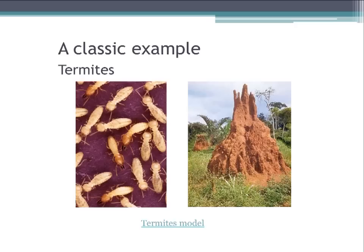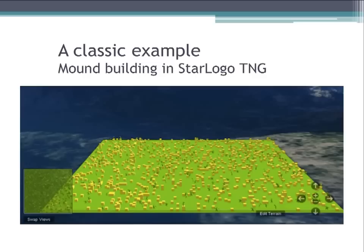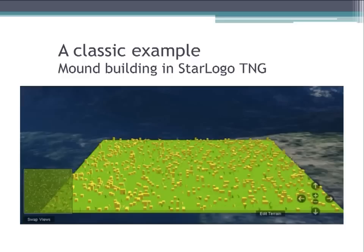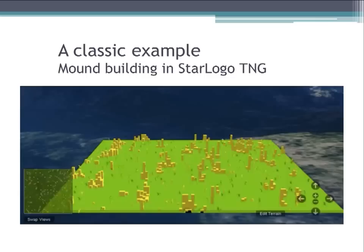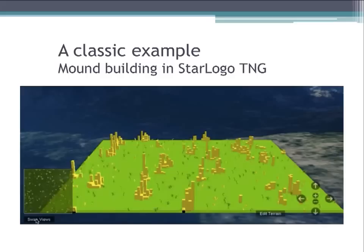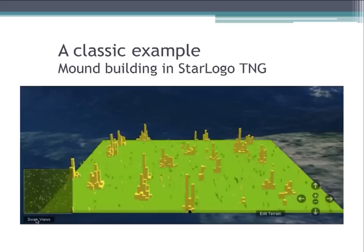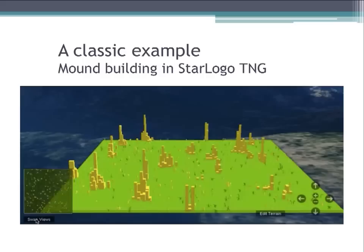A classic example is termites and their mound building. In a StarLogo TNG model, there are termites and wood chips — the wood chips are yellow cubes. Termites follow three simple rules: they wander until they find a wood chip, pick it up and carry it, then roam until they find another wood chip, at which point they drop the one they're carrying next to it. With these simple rules, we see how mounds can develop. Nowhere in this model were termites told to form just a few tall mounds, yet through their collective action, this is what happens.